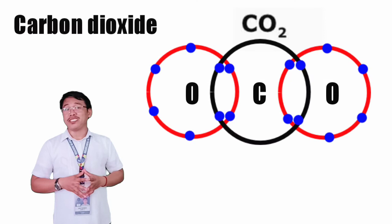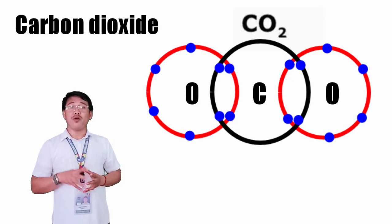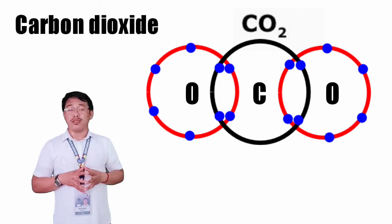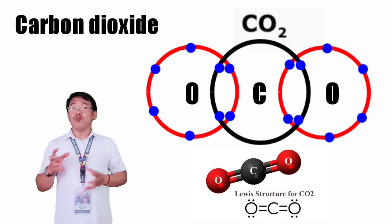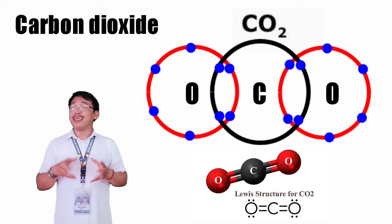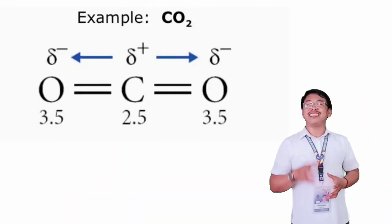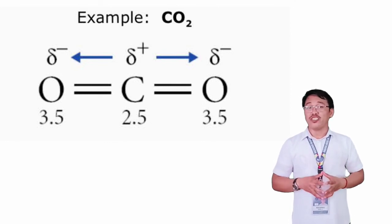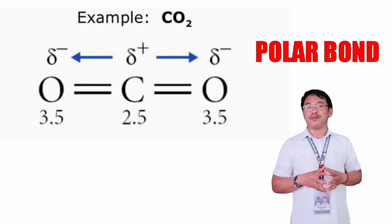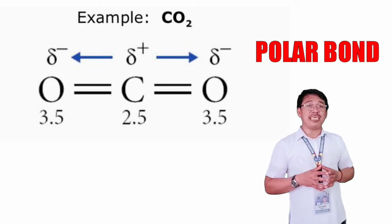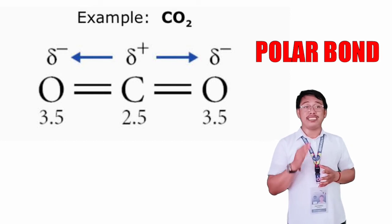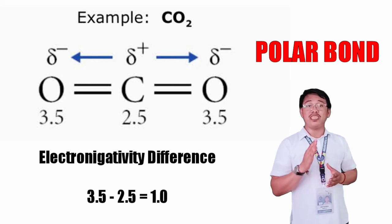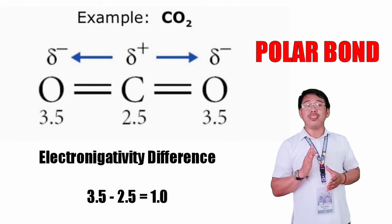Let's use carbon dioxide as an example. Carbon has four electrons and oxygen has six. So carbon needs four and oxygen needs two to become stable. Therefore, the two oxygen atoms will share their electrons to carbon making them stable. Since oxygen is denser, it gains a partial negative charge and carbon a partial positive charge, making it a polar molecule. In terms of electronegativity, the electronegativity value of oxygen is 3.5 and carbon is 2.5, giving them an electronegativity difference of 1.0, making the molecule a polar bond.